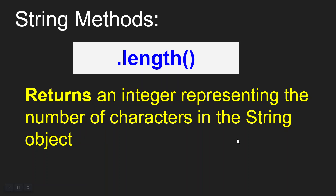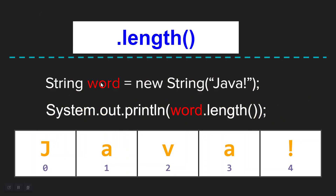From here on out we're going to look at a bunch of string methods. These are all methods that are in the string class. The first one is length() with parentheses on the end. This will return an integer representing the number of characters in the string object. So if I had string word equals new string Java, and then called word.length() inside a print statement, it's going to return the number five.